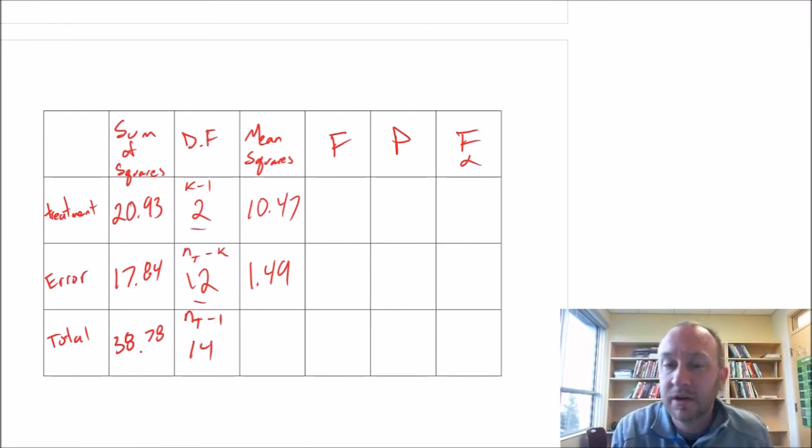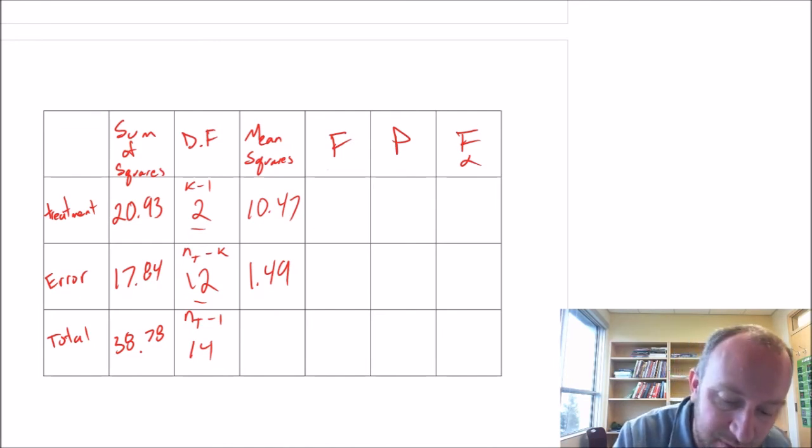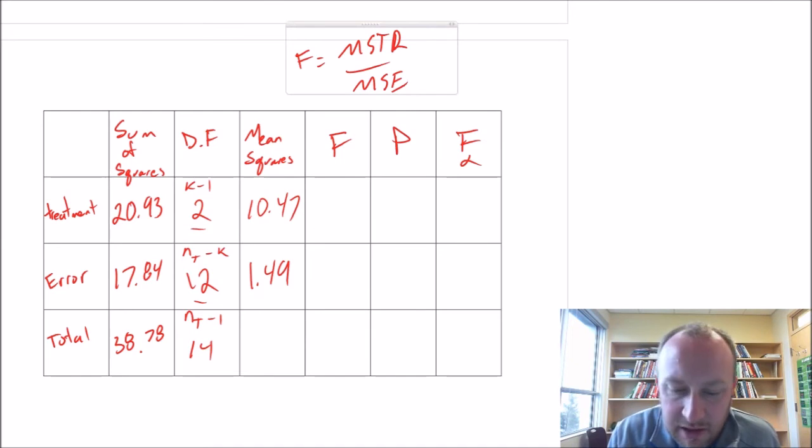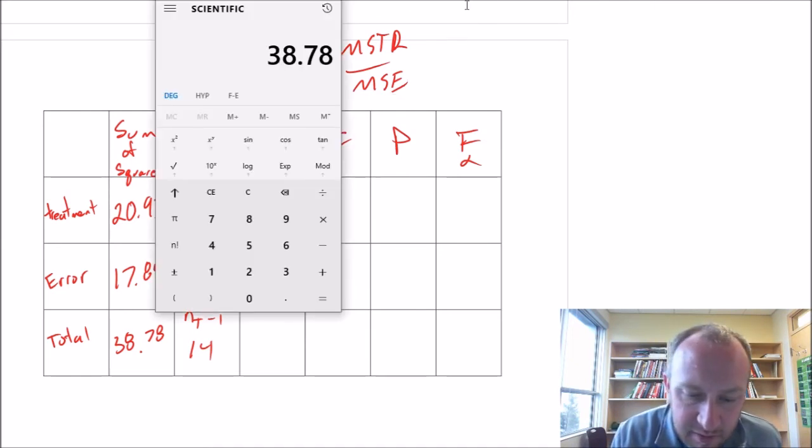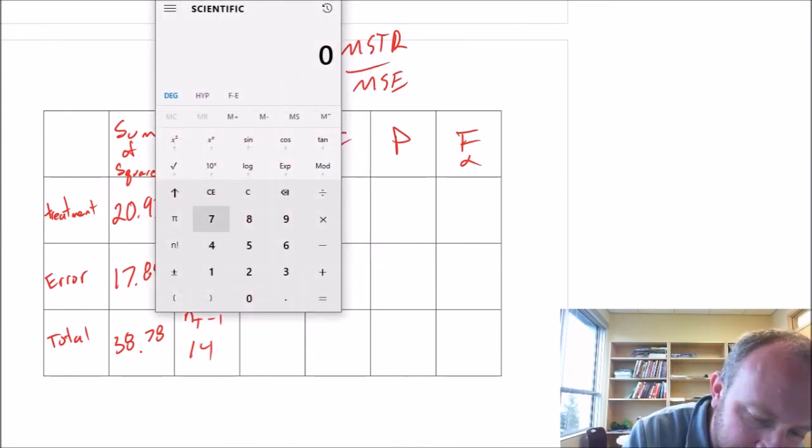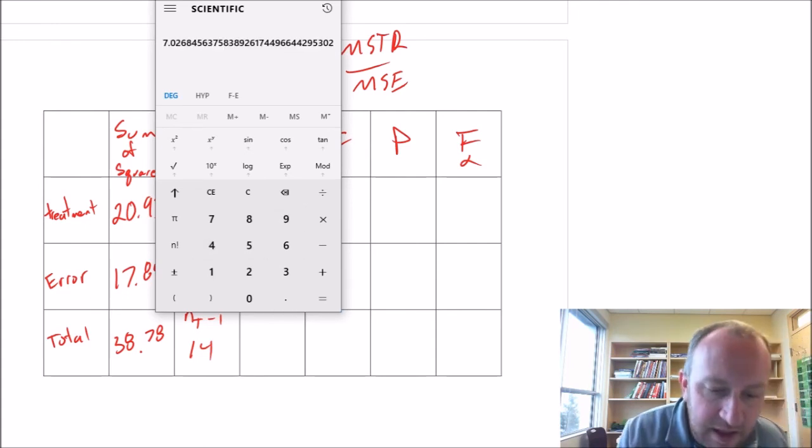Okay, now we can find our test or our F statistic, which is F is simply MSTR divided by MSE. So 10.47 divided by 1.49 - so 7.03 is our test statistic.